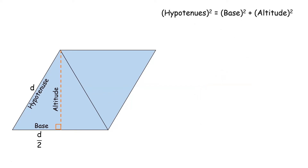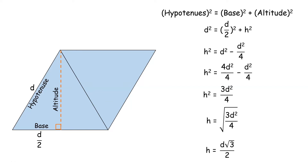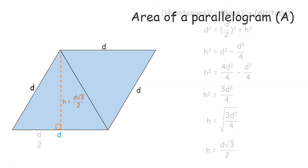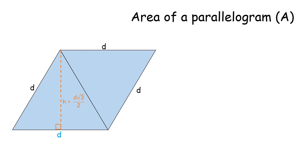Based on the equation, the height or altitude of the triangle is d times the square root of 3 divided by 2. Therefore, the area of the parallelogram is equal to d² times the square root of 3 divided by 2.